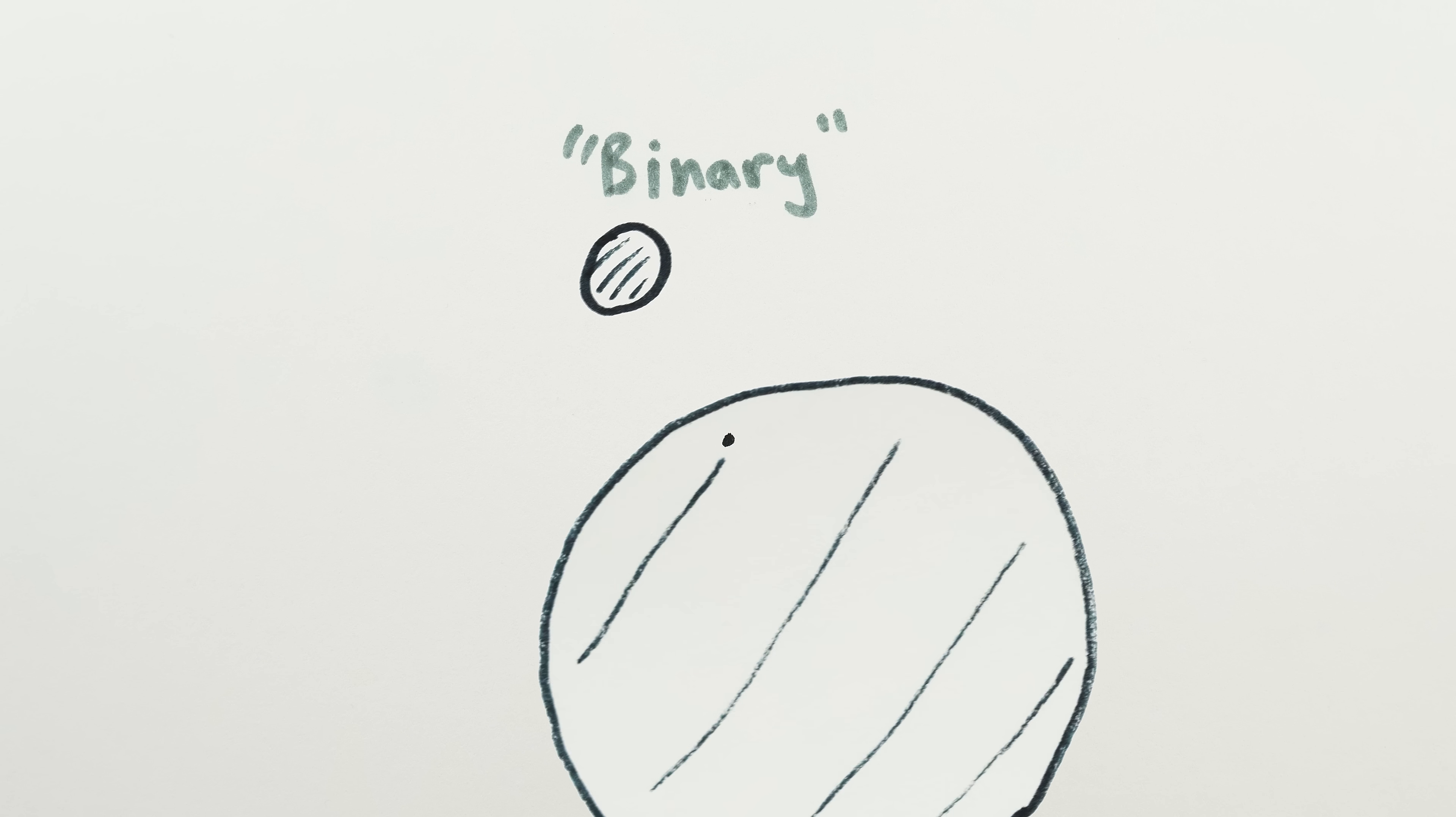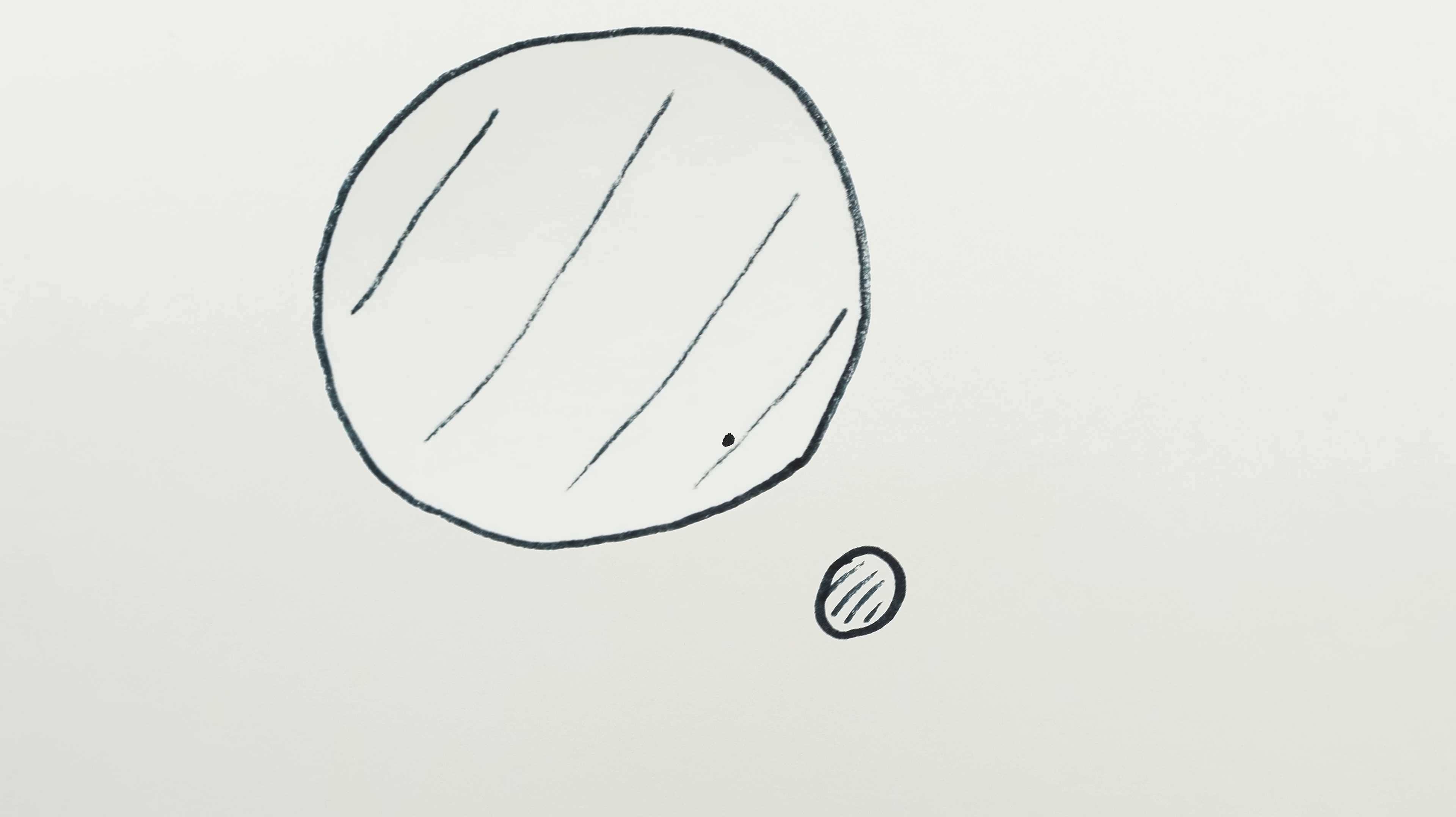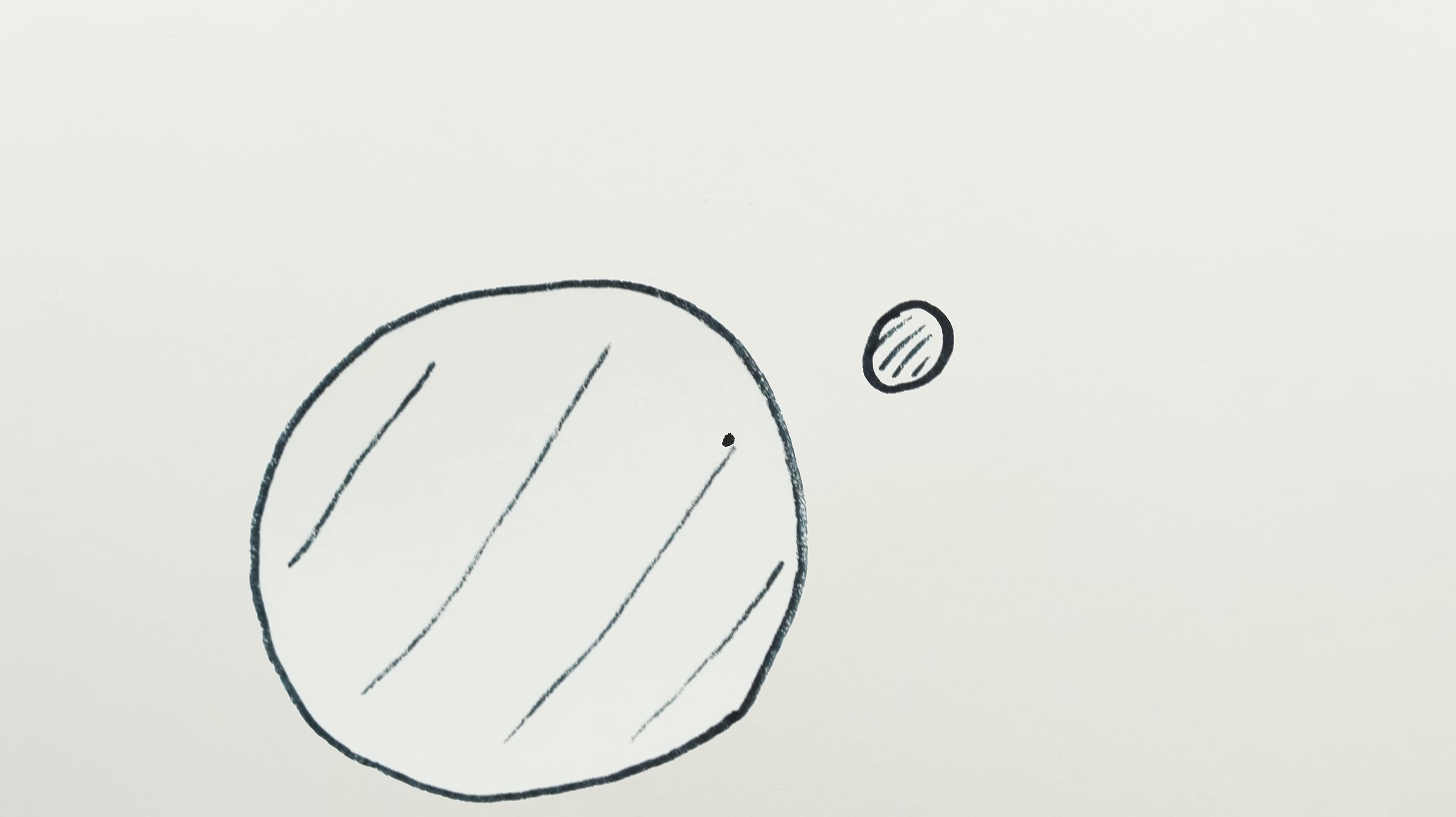But if one of the objects had a low enough density, its radius could be big enough that the center of mass would be inside that object, and suddenly our quintessential binary system becomes, according to the barycenter test, a satellite planet system.